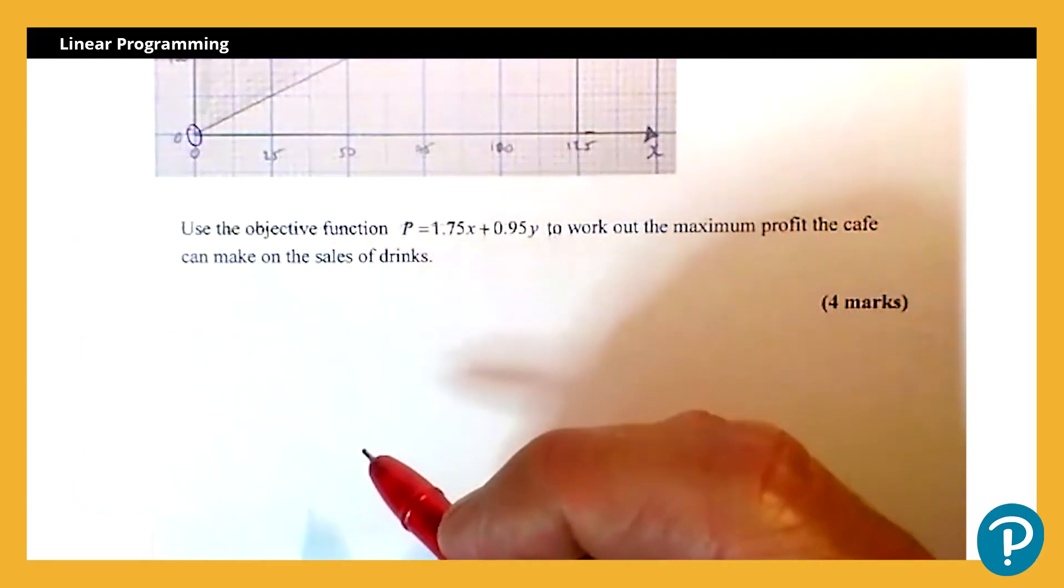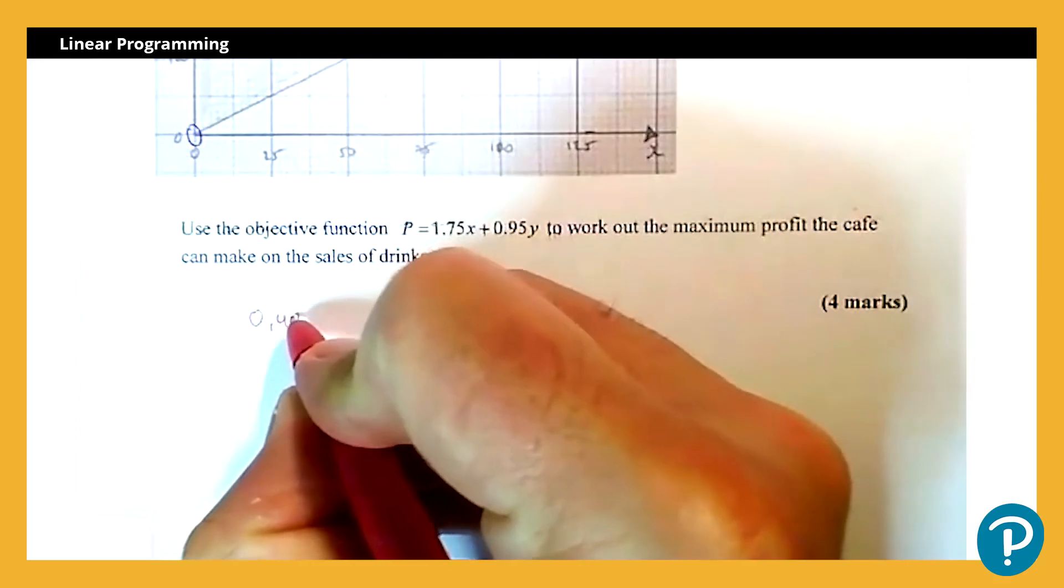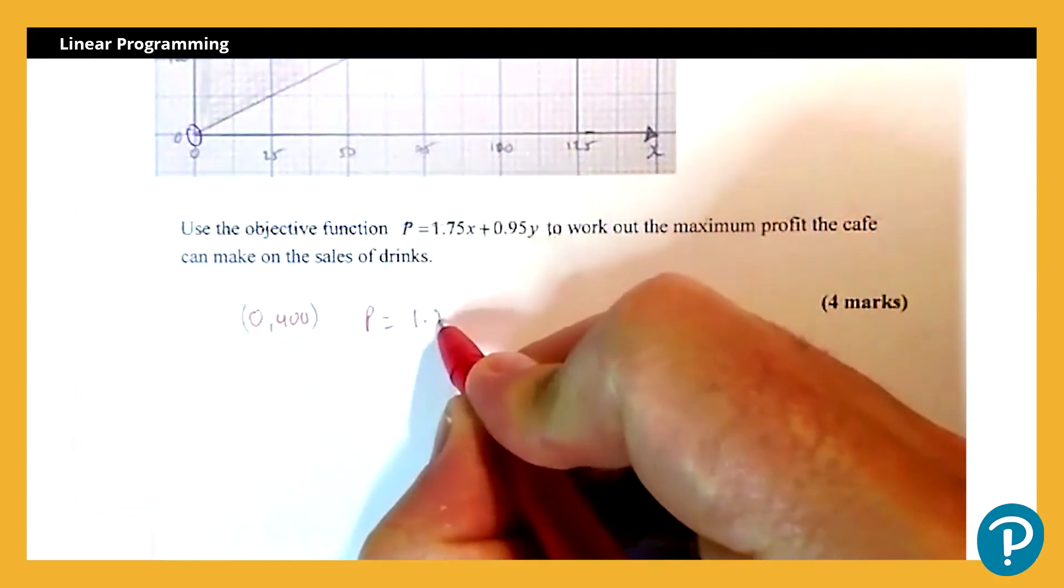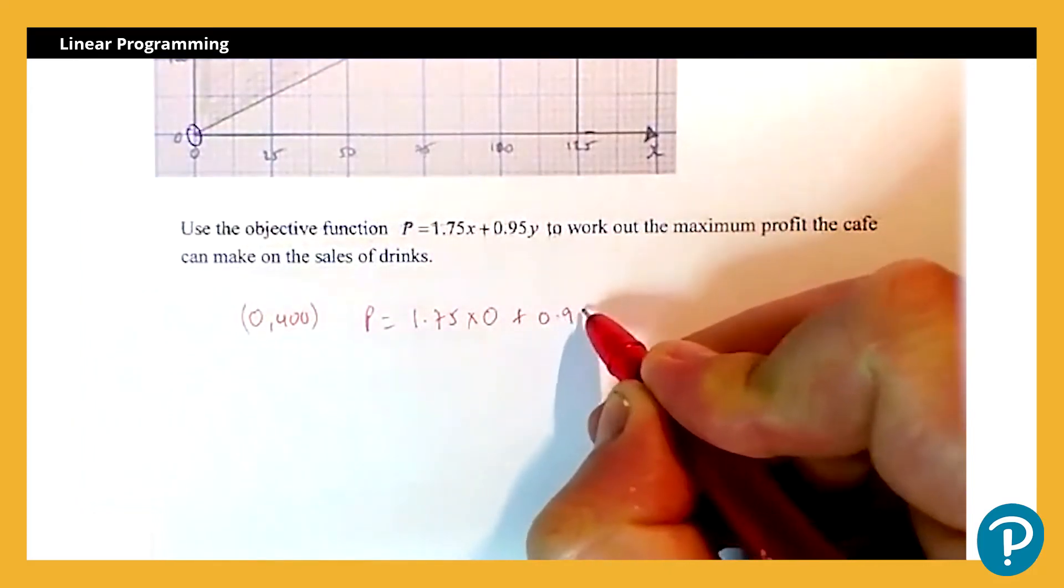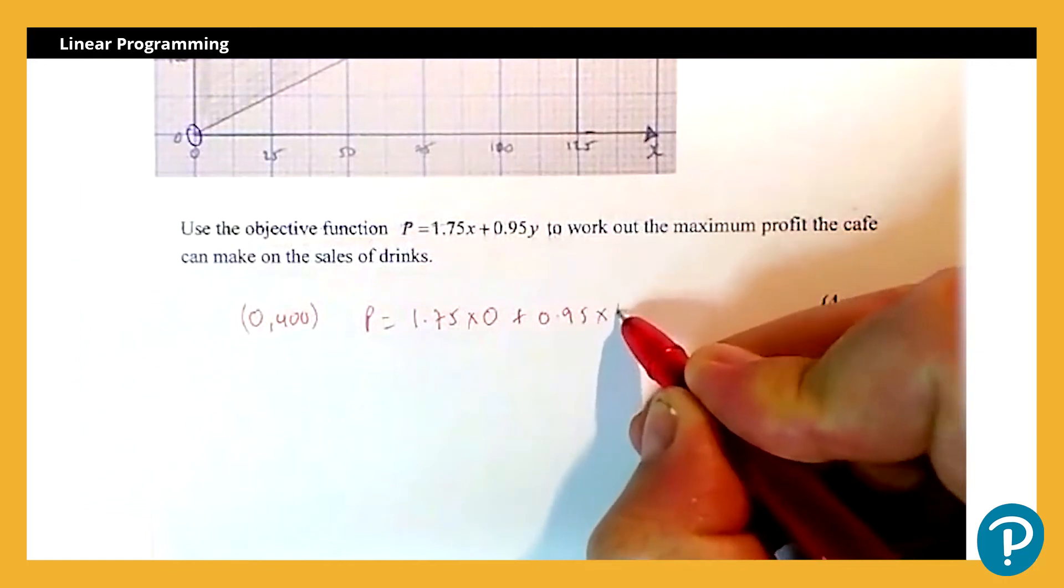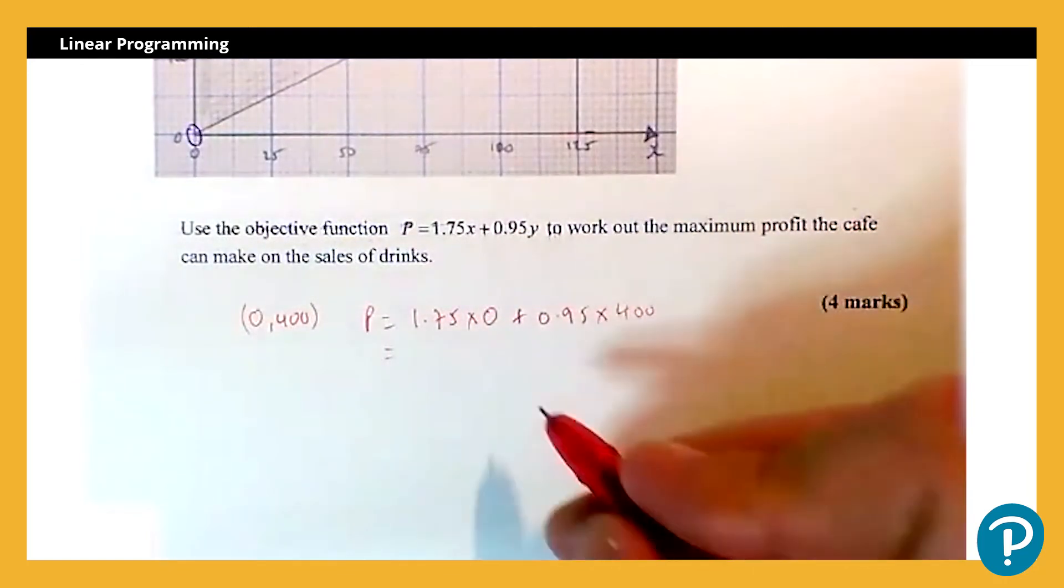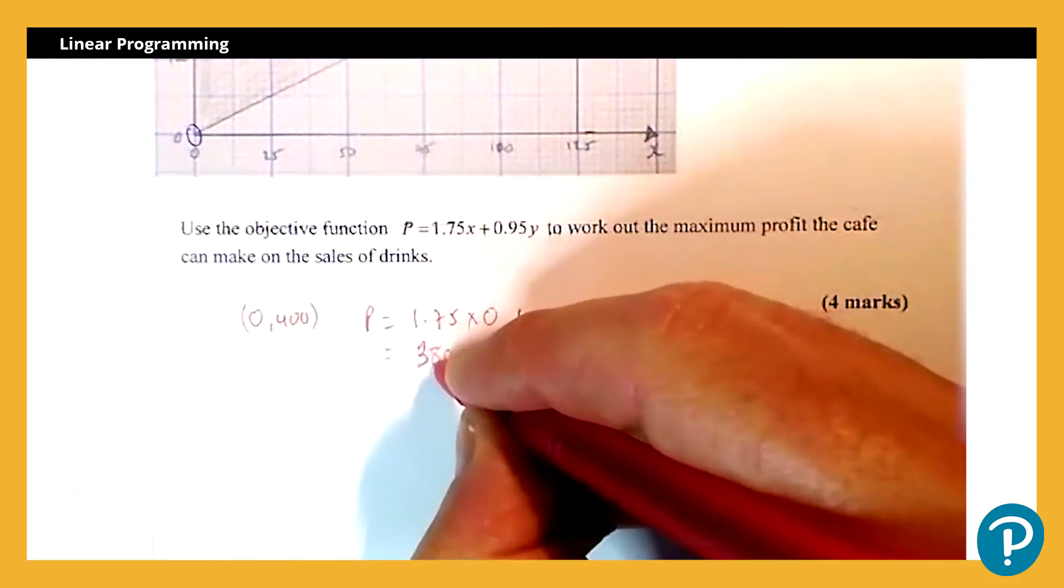So working first of all with the coordinate (0, 400), P = 1.75 times the x value 0 plus 0.95 multiplied by the y value 400, and that works out at 380.